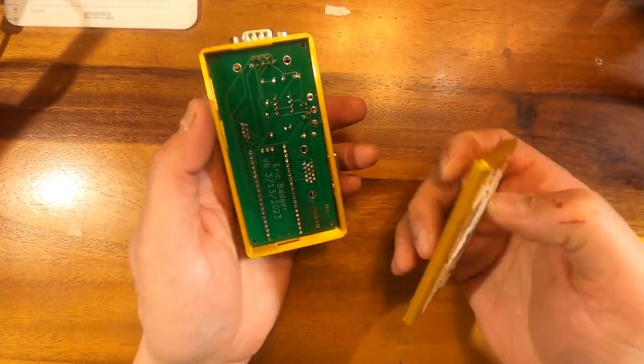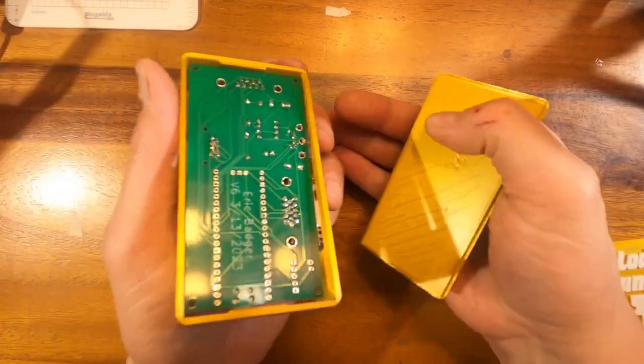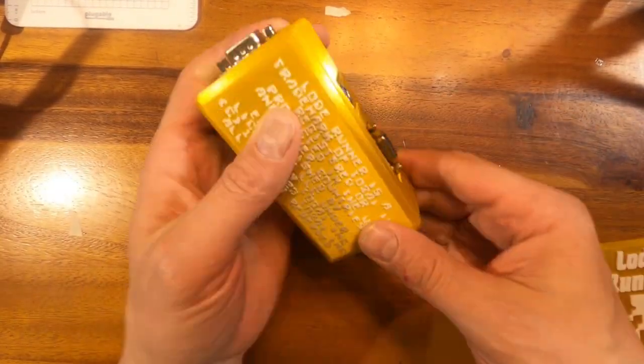Here's the bottom piece. If you look here you'll see that the body and the bottom are keyed. It's not quite centered. It's meant to go together in a specific direction. Pop it together like that.